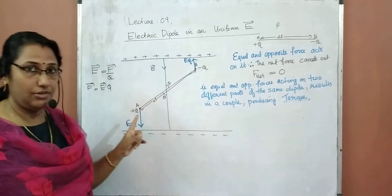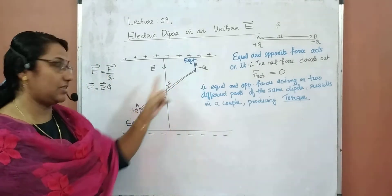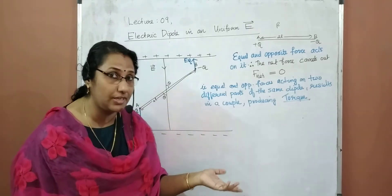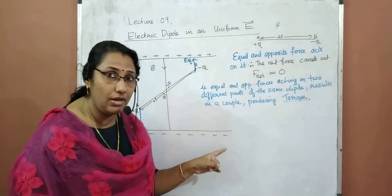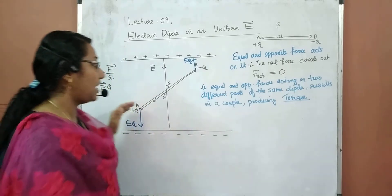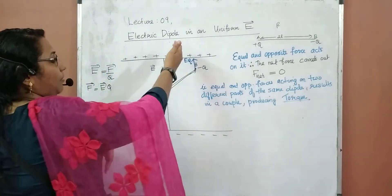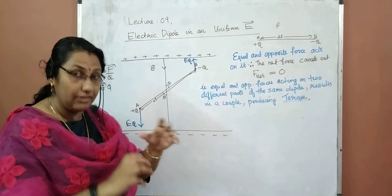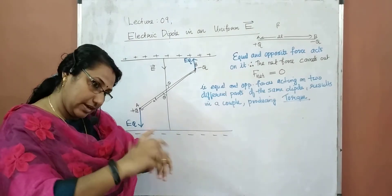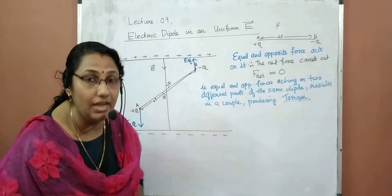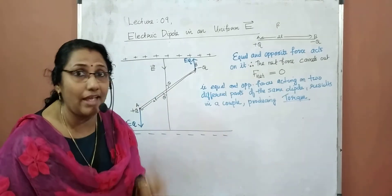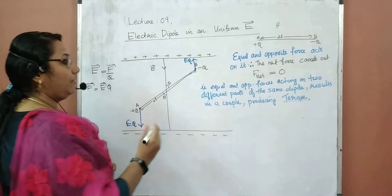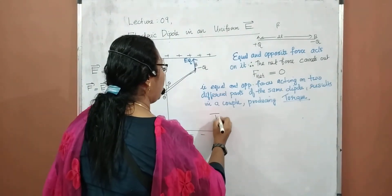When the electric dipole is placed in a uniform electric field, equal and opposite forces act on the two charges. The net force becomes zero, but since these forces act on two different parts of the same dipole, they result in a couple producing a turning effect called torque. A torque acts on the dipole, and we are going to find its value.